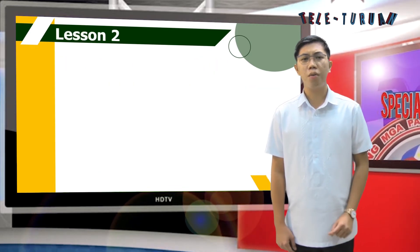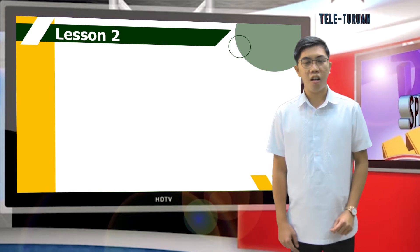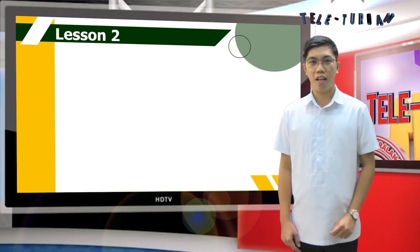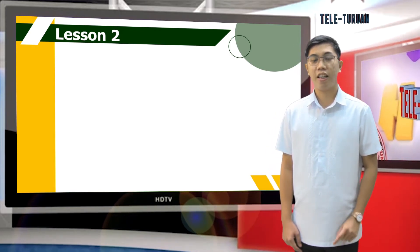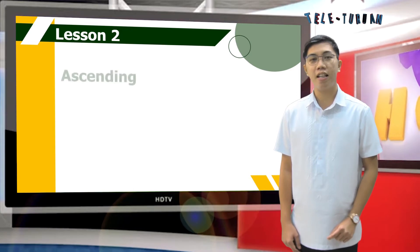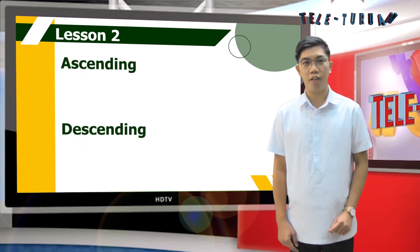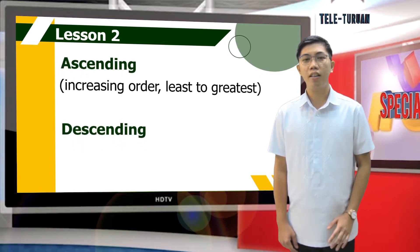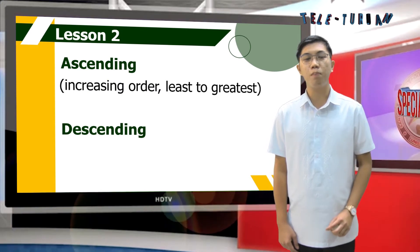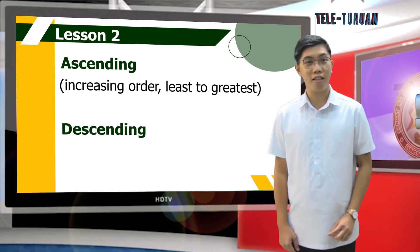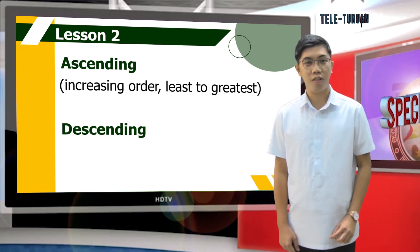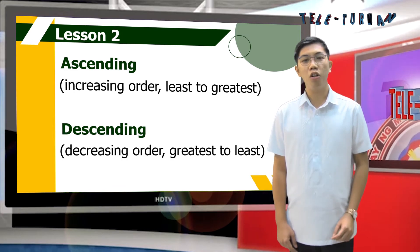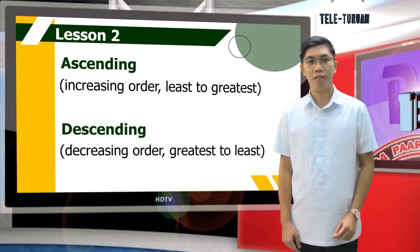Since you already know how to compare, you are now ready to arrange decimals. It can be in an ascending or descending order. If you want ascending order, you always pick the smallest first. If you want descending order, you always pick the largest first.